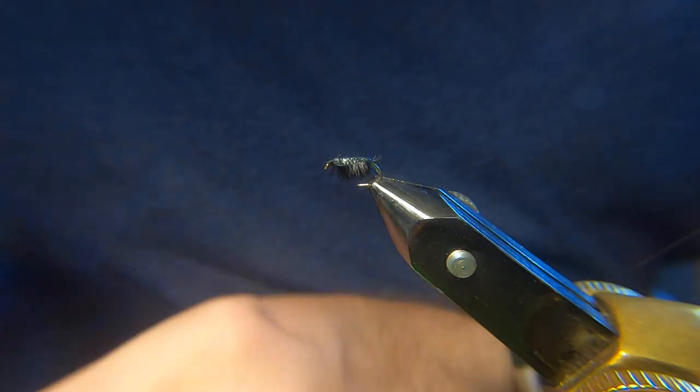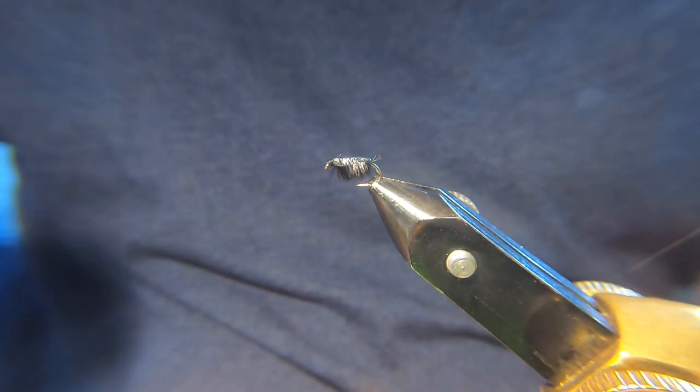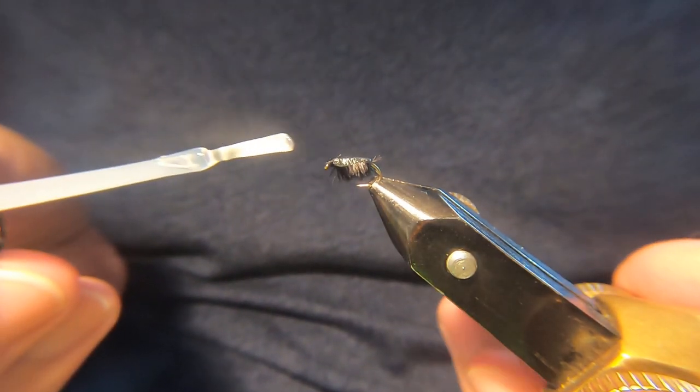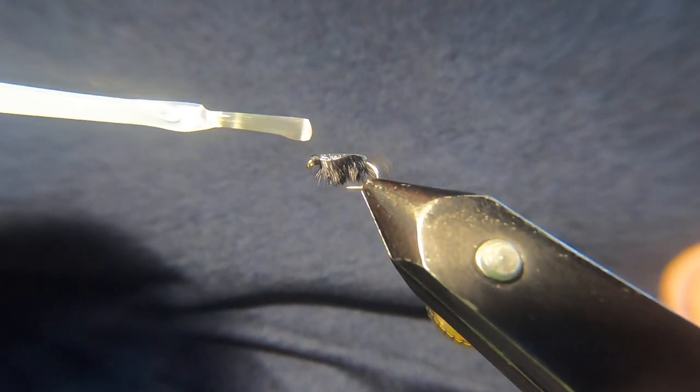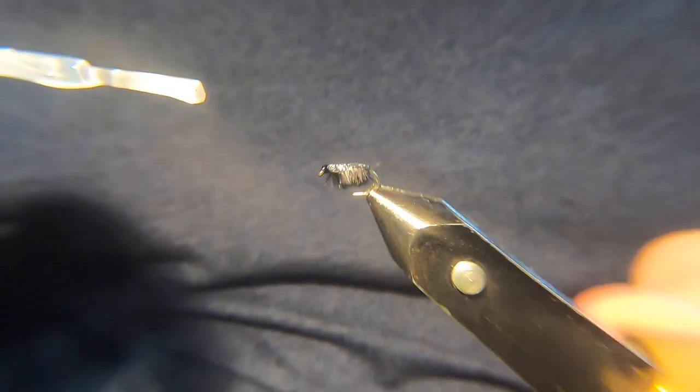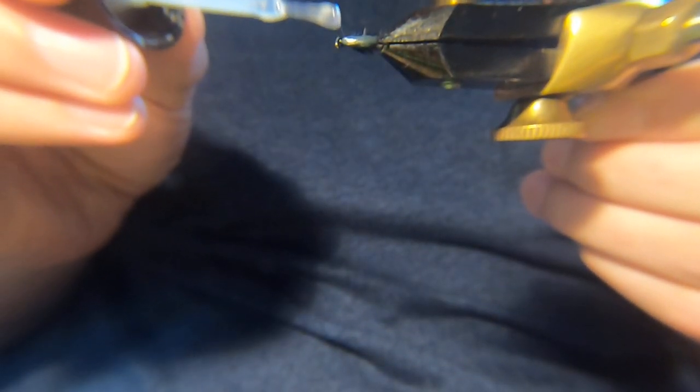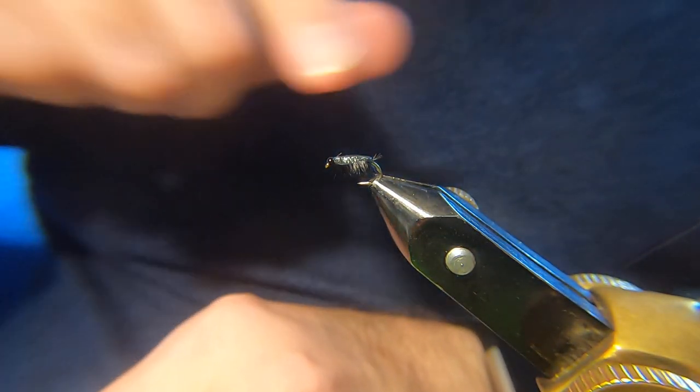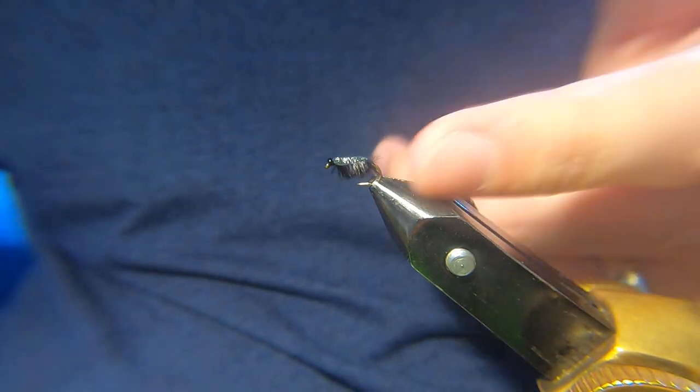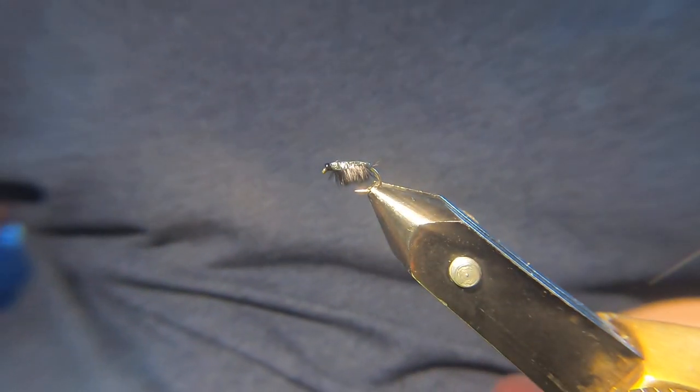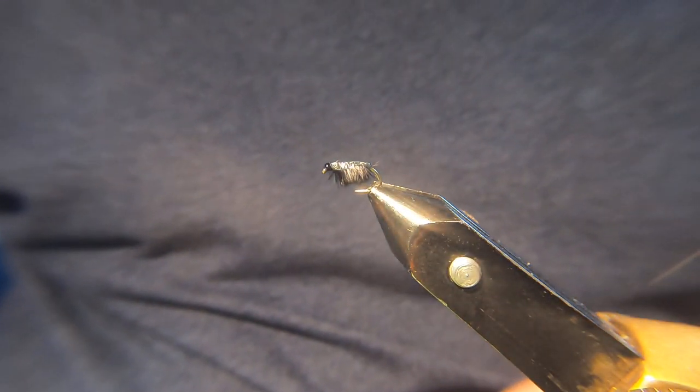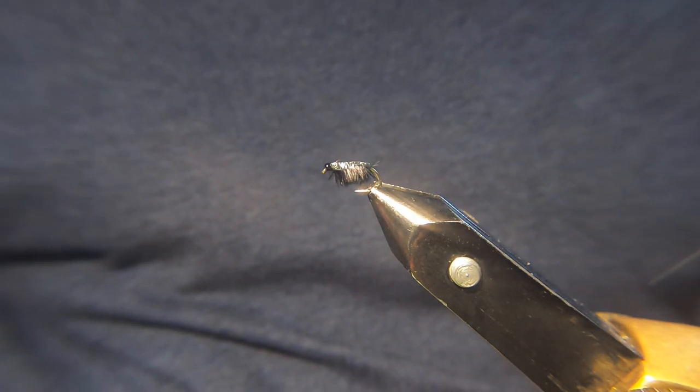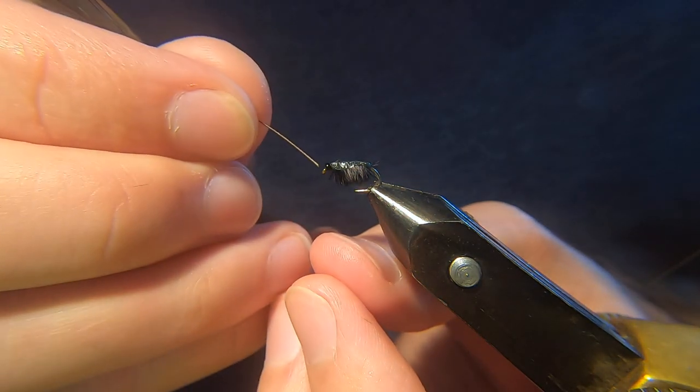A wee touch of varnish. A lot of guys will varnish the raffia. I've never found the need to. What you can do is, if you don't want to lead it but you want to add a bit of weight, you could put some resin on the back. You could use shell back and stuff for these types of things. I've chopped and changed over the years, tried loads of different things, but I've never found anything that catches me more fish.